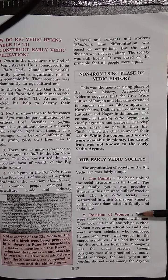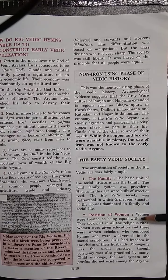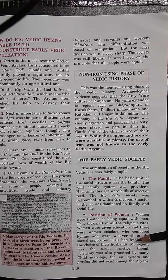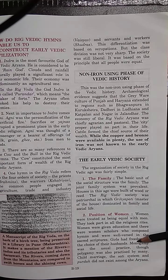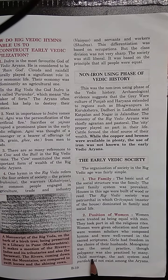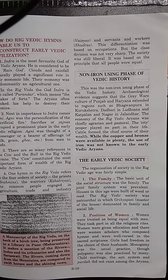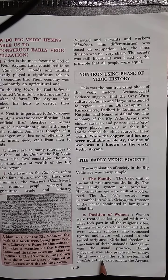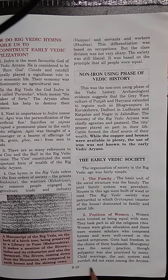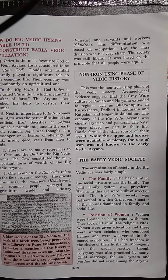Regarding the position of women: during the early Vedic period, women were treated as equals with men — no discrimination existed. Women could take part in all religious rites, were given education, and women scholars existed. Girls had the freedom to choose their husbands. Monogamy was in practice, though some examples of polygamy also existed. Social evils like child marriage, the sati system, and purdah were not present in the early Vedic period.